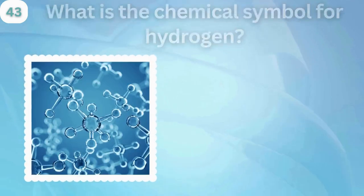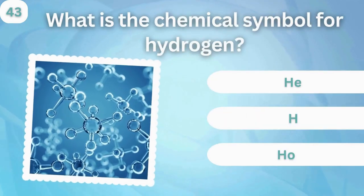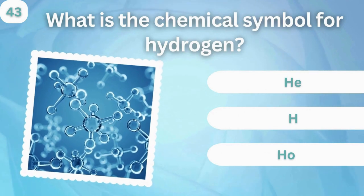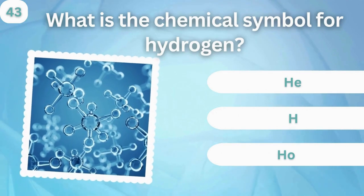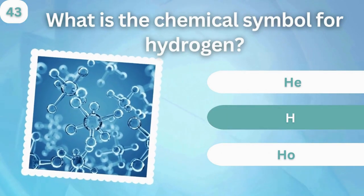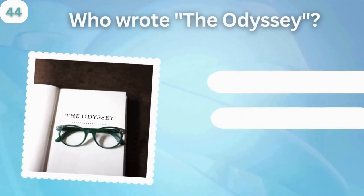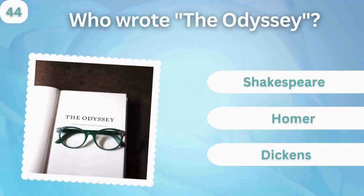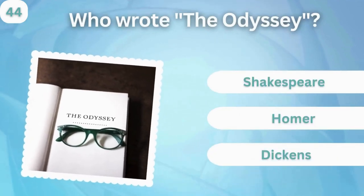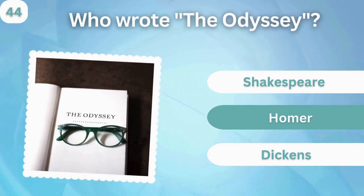What is the chemical symbol for hydrogen? P, H, or Ho? H. Who wrote The Odyssey? Shakespeare, Homer, or Dickens? Homer.